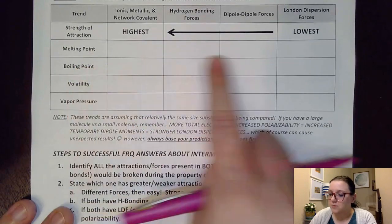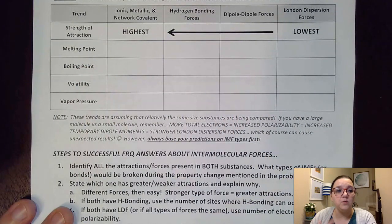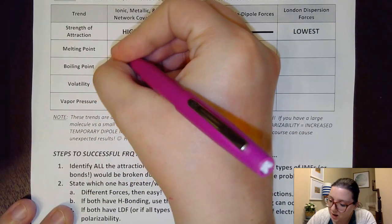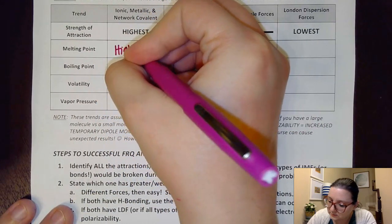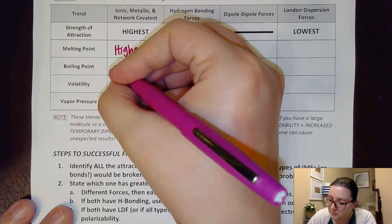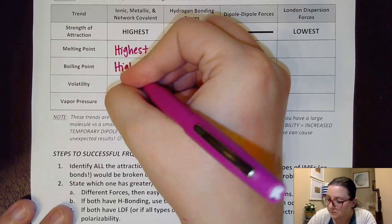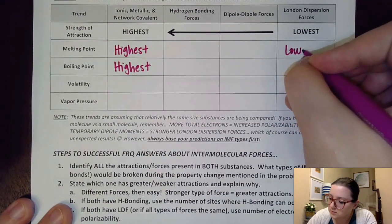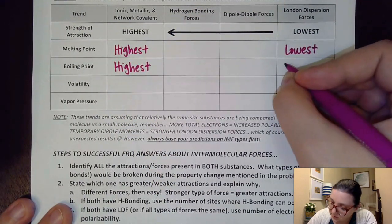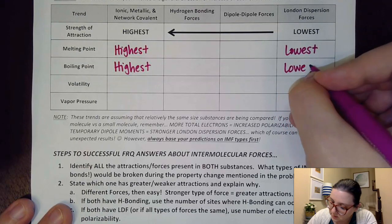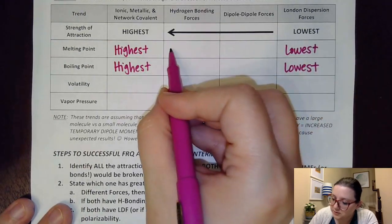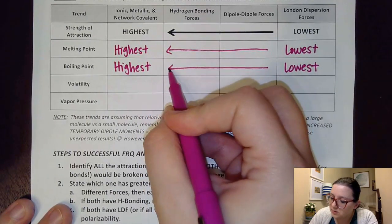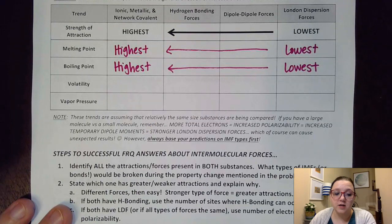To rank our melting and boiling points, if our strength of attractions are really high, then we should have our highest melting and boiling points, meaning our lowest would be predicted to be with London dispersion forces. Again, there are anomalies to that trend, but in general this would be your trend from high to low.